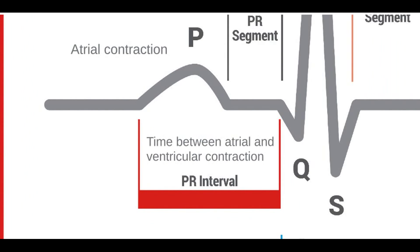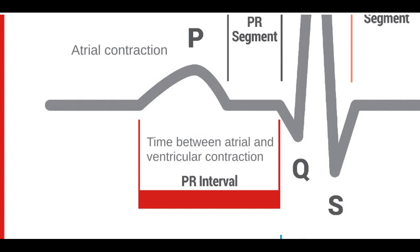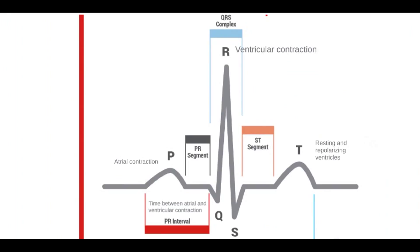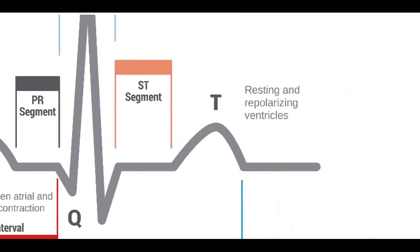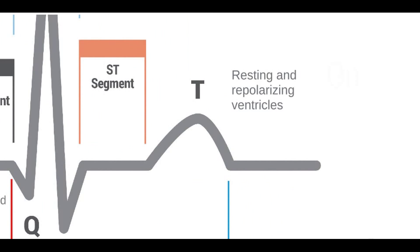The time between atrial and ventricular contraction registers on an ECG strip as the PR interval, while the ventricular contraction registers on an ECG strip as the QRS complex. Following ventricular contraction, the ventricles rest and repolarize, which is registered on the ECG strip as the T wave.